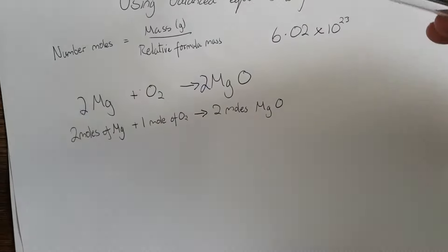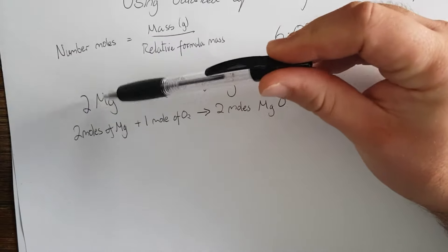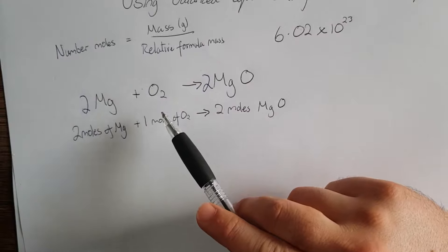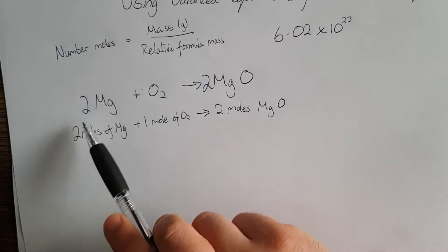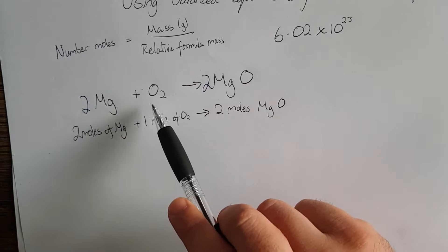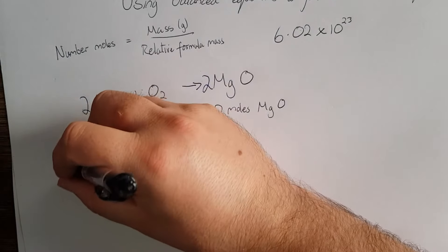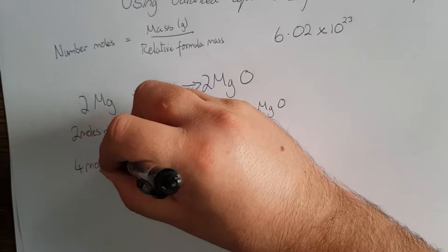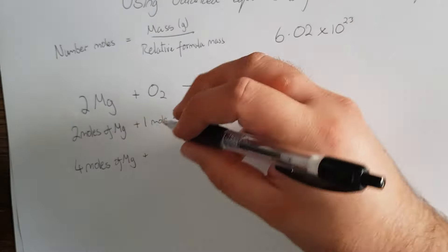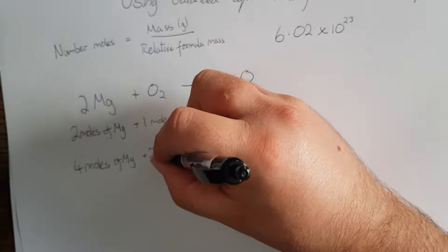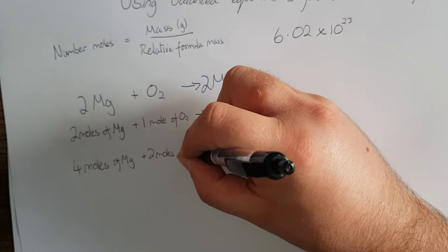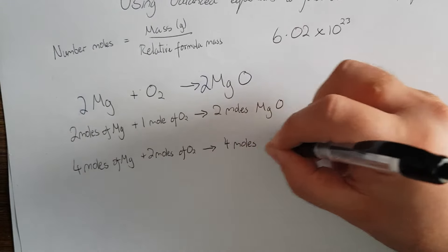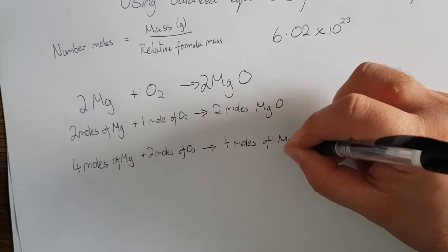We can change this around as well. If I had four moles of magnesium, how many moles of oxygen would I need? If I've doubled the magnesium, I need to double the oxygen as well — so I'd have two moles of oxygen. Four moles of magnesium plus two moles of oxygen would give me four moles of magnesium oxide.